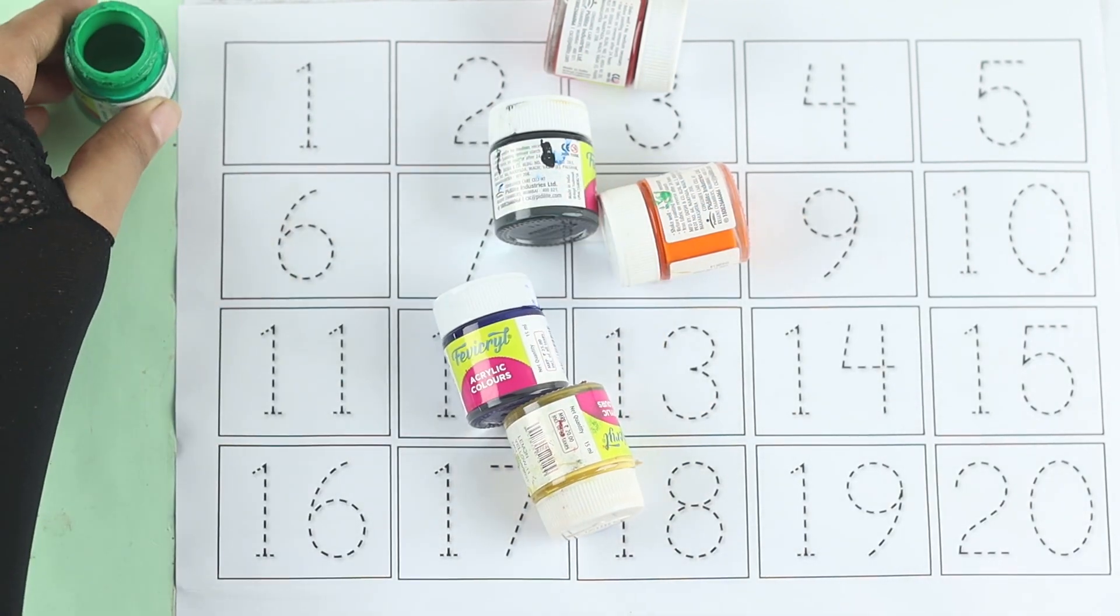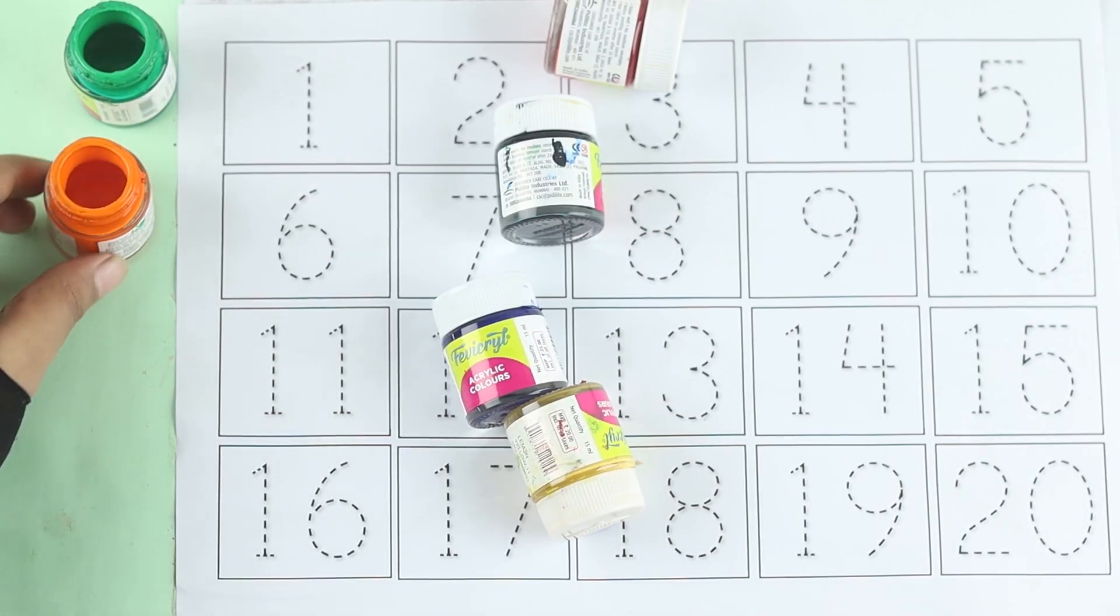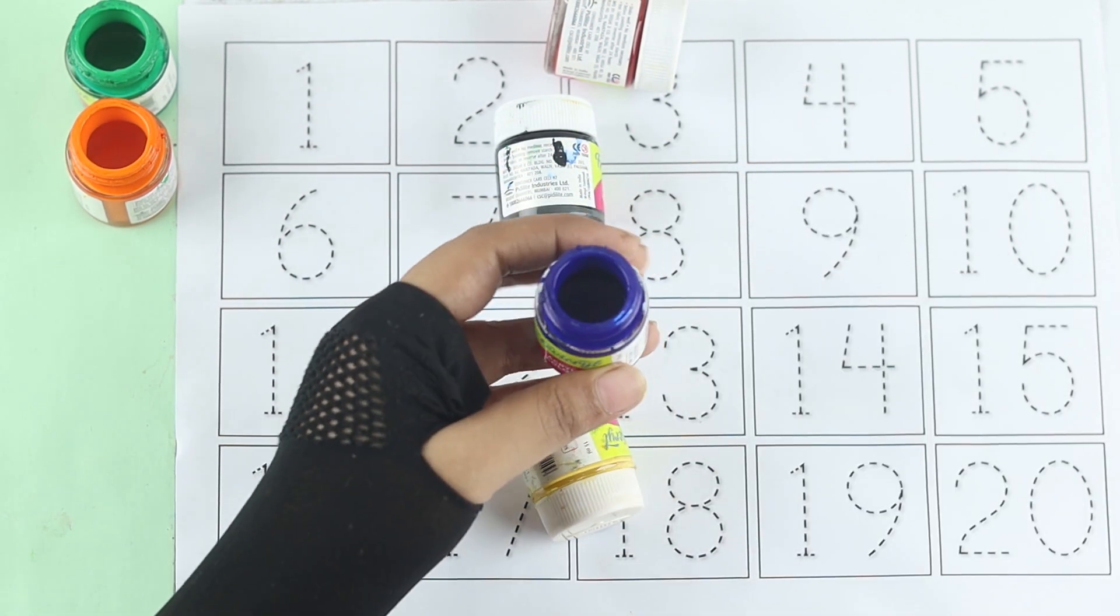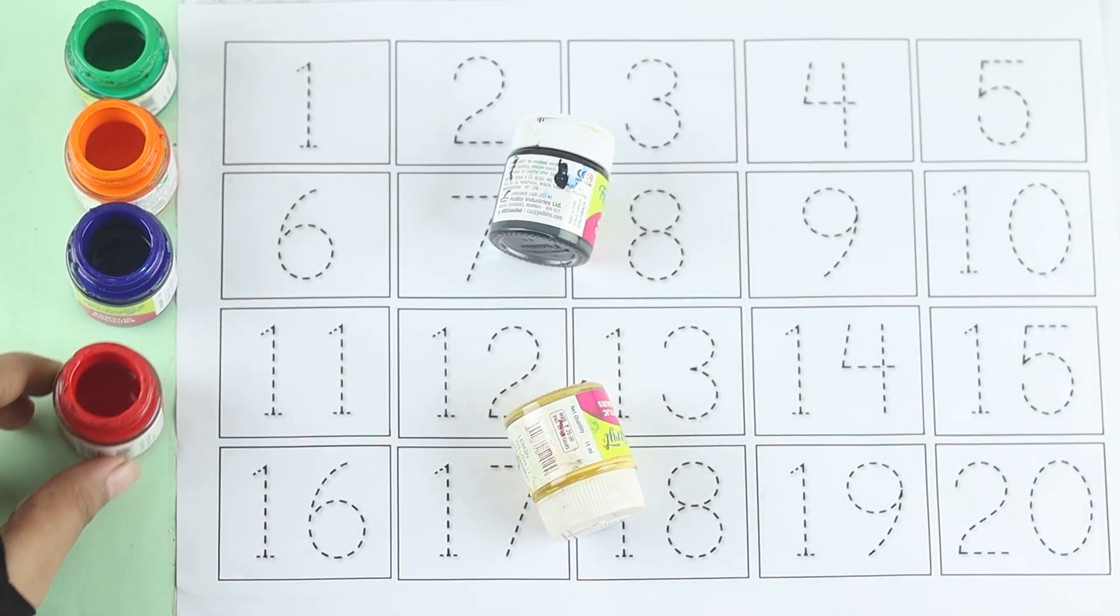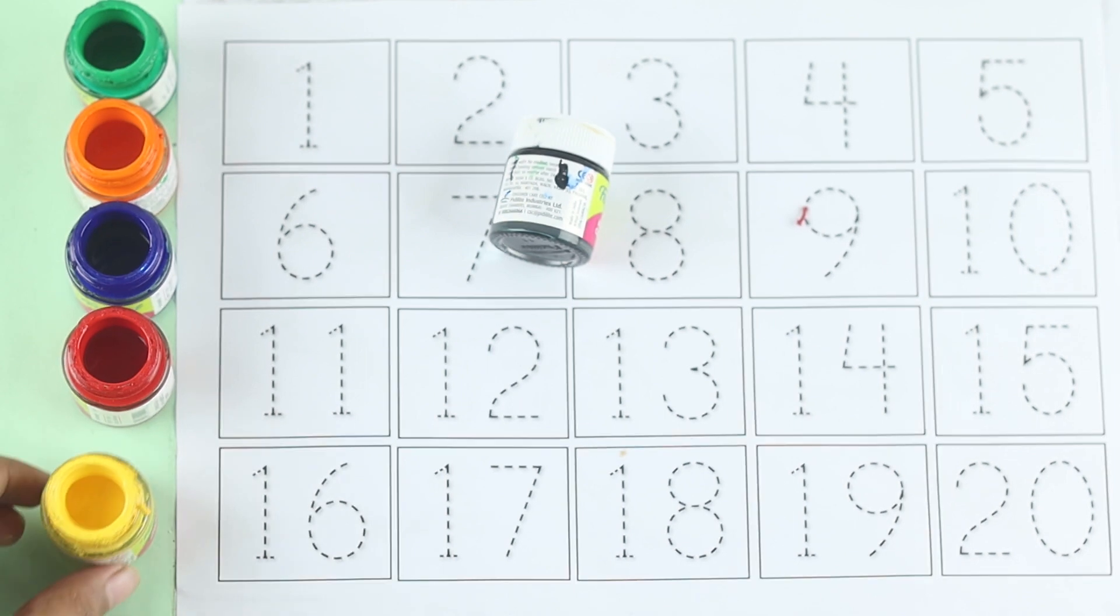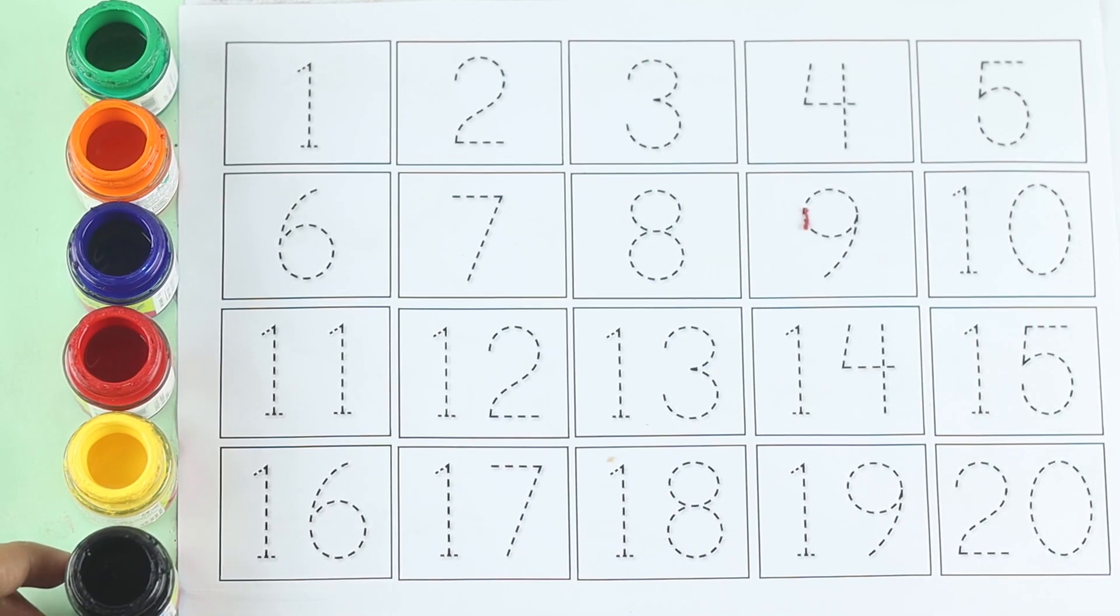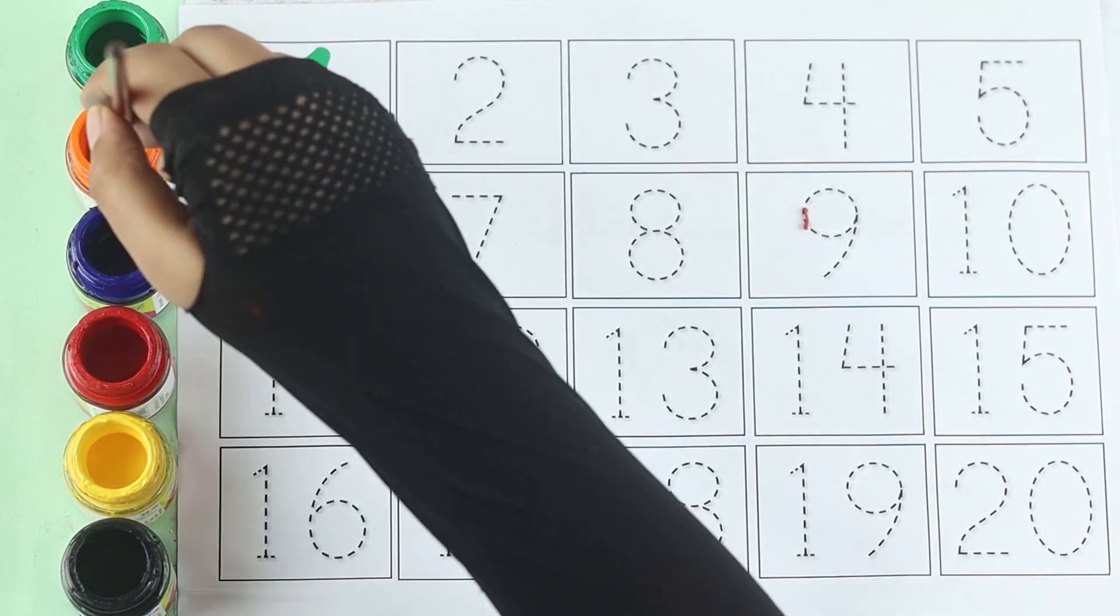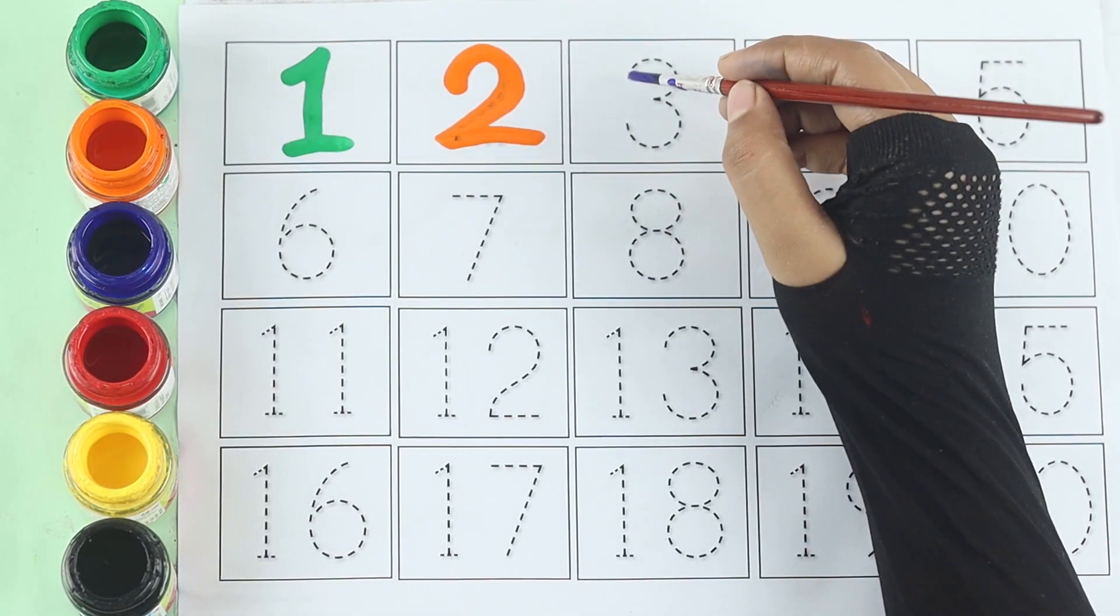Green color, orange color, blue color, red color, yellow color, black color. Green color one, orange color two, blue color three.